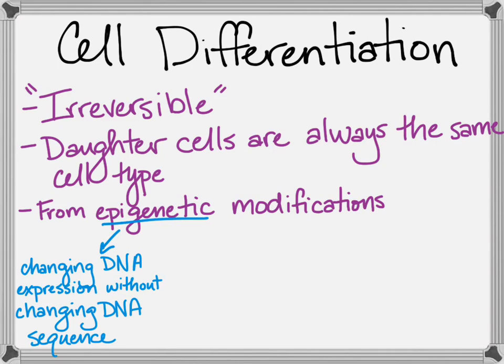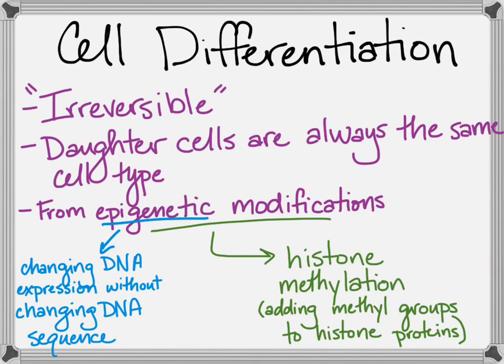Epigenetics is changes to the chemical structure of the genome without changing the DNA sequence found on the chromosomes. The histone proteins are methylated so that they wrap the DNA very tightly in areas where genes should never be expressed. This methylation is passed down to each daughter cell so that they are always locked in to a particular cell type.